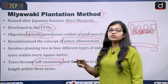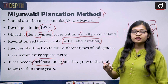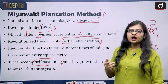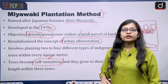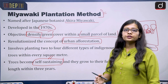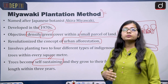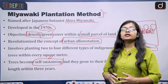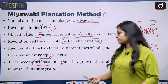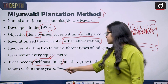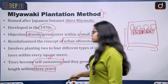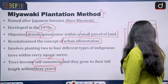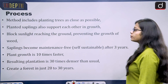The trees become self-sustaining and grow to their full length within three years. These trees used in the Miyawaki technique do not require much care like other trees. Initially they require a little care, but after three years they can take care of themselves.